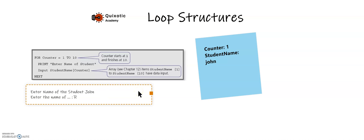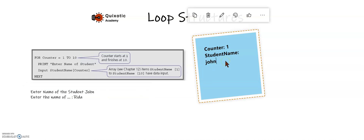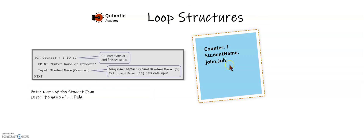Now I'll enter Rida. Whenever I enter the next name, it will go to the next position in the list. So that was Rida — now the counter is two. The counter is automatically incremented in the for loop.